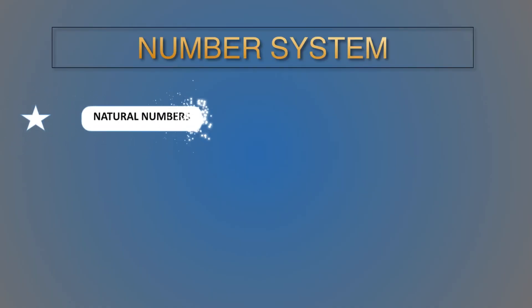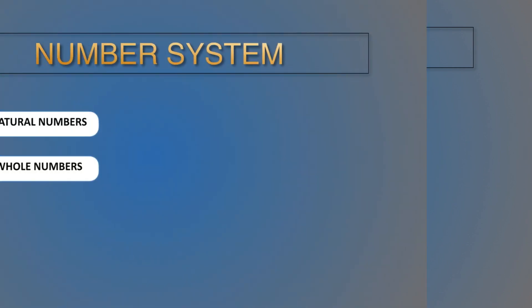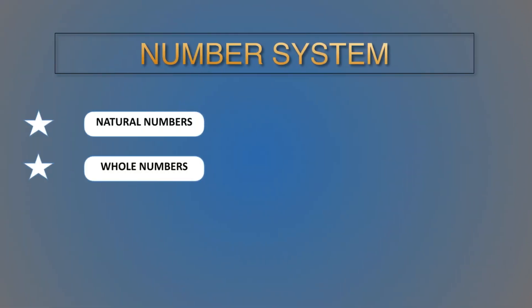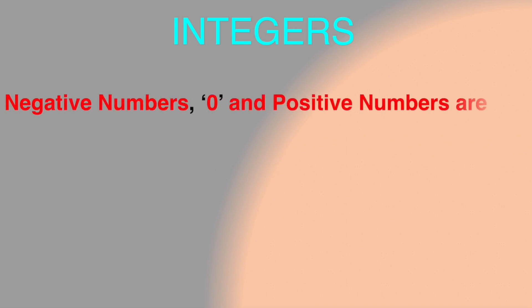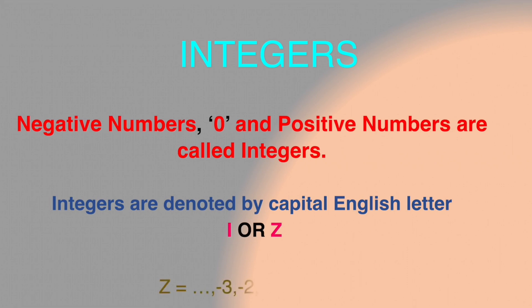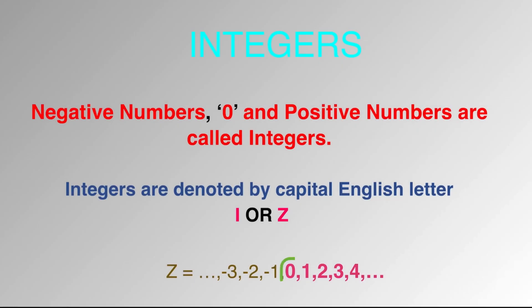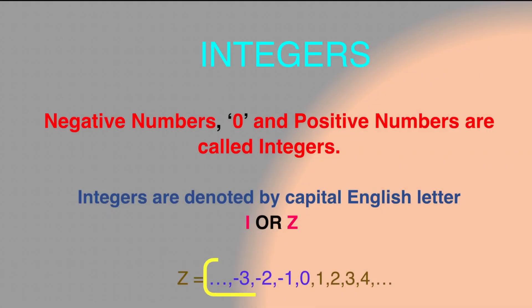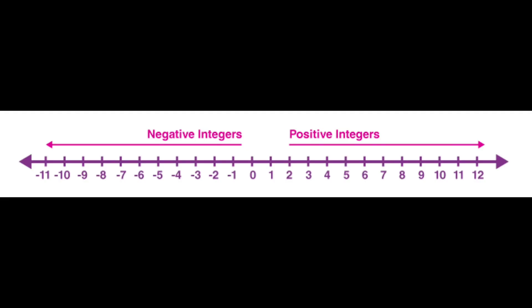Only natural numbers and whole numbers are not enough in our daily life. Next, integers. Negative numbers, zero, and positive numbers are called integers. Integers are denoted by Z. Z = {..., −3, −2, −1, 0, 1, 2, 3, 4, ...}. Sometimes zero and positive numbers are called non-negative integers, and negative numbers and zero are called non-positive integers. Positive numbers are denoted by Z⁺ and negative numbers are denoted by Z⁻.